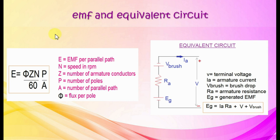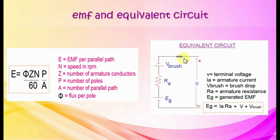Equivalent circuit of the DC generator: V is terminal voltage, IA is armature current, RA is armature resistance, V brush is brush drop, and EG is generated EMF. Generated EMF equals the sum of armature resistance drop (IA times RA), brush drop, and terminal voltage.